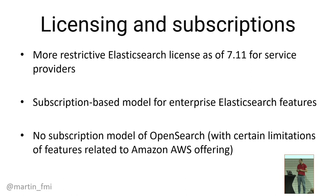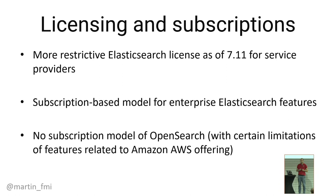In terms of licensing, as mentioned, the Elasticsearch license as of version 7.11 is more restrictive for service providers like Amazon. There is a subscription-based model for enterprise Elasticsearch features. In OpenSearch, there is no subscription model — everything is publicly available on GitHub, with certain limitations related to features bound to the Amazon AWS offering. The primary idea of OpenSearch is to gather contributions from the community. In Elasticsearch, contributions need to be reviewed and merged by an Elastic employee. In OpenSearch, the model is more flexible and open — you can more easily add new plugins or improve the codebase.